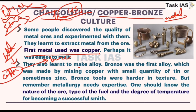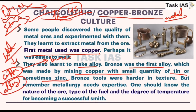Humans learned to make alloys. Bronze was the first alloy, made by mixing copper with a small quantity of tin, and sometimes zinc was also used. It was not like experiments in a lab; it was a hit-and-trial method, and gradually people realized this was the best alloy for specific purposes. Later, names were given to these metals. This was a gradual development.